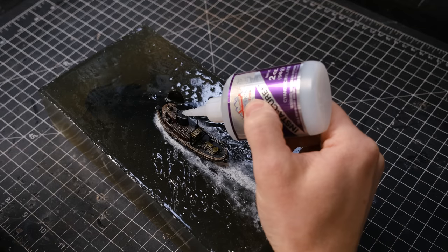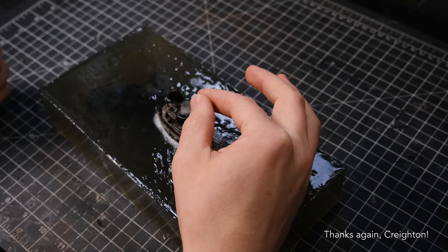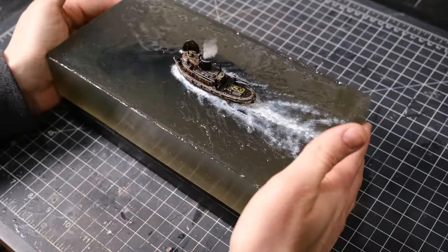For that alligator build, my friend Creighton told me to include some cotton smoke for the steamboat, so I did the same thing for this one. The last thing to do was to put it on its base, and I called it good.